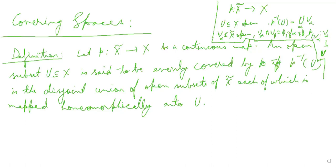So, p restricted over V-alpha is a homeomorphism from V-alpha to U.